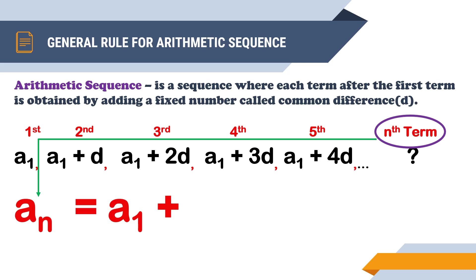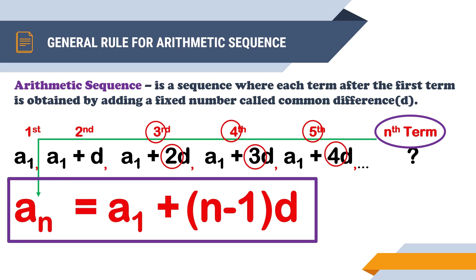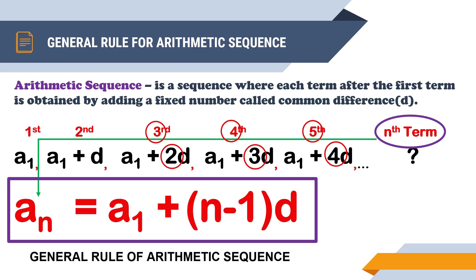Observe the pattern: the fifth term has 4d, the fourth term has 3d, the third term has 2d, the second term has 1d, and the first term has 0d. Notice that the position of the term is always one more than the number of d's. So to get the number of d's to add to a₁, we subtract 1 from the position n. This gives us (n − 1) times d, and the general rule becomes: a_n = a₁ + (n − 1)d.